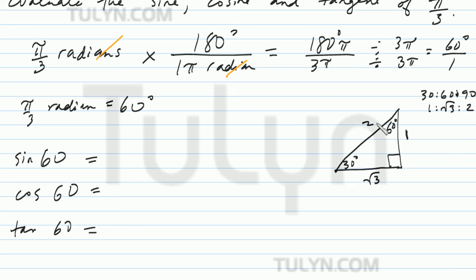So if we were to find sine of 60, we're going to utilize something called SOHCAHTOA. And what sine represents is opposite over hypotenuse. Opposite of angle 60 over hypotenuse.